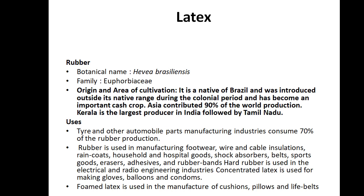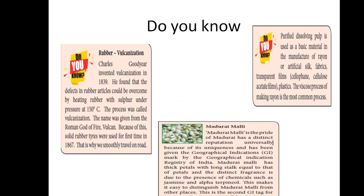Rubber is used in automobile parts manufacturing industries, rubber production, tires, rubber materials, rubber footwear, wire, handbags, cable installations, raincoats, household items, hospital goods, shock absorbers, belts, sports goods, erasers, adhesives, and rubber bands. Hard rubber is used in electrical and radio engineering industries. Concentrated latex is used in making gloves, balloons, and condoms. Foamed latex is used in cushions, pillows, and life belts.